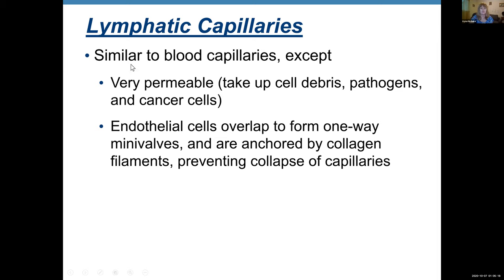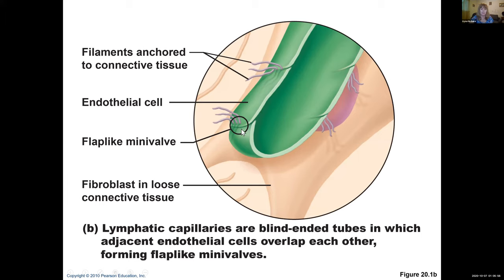Lymphatic capillaries are similar to blood capillaries except they're very permeable because they take up cell debris, pathogens, and cancerous cells. The thin cells that make up those capillaries overlap to form one-way mini valves — we don't have valves in blood capillaries. Those capillaries are anchored by collagen filaments to the extracellular matrix, preventing collapse of the capillaries. You can see how lymphatics have this blunt end, with mini valves and filaments anchoring them to connective tissue.